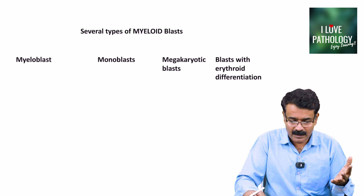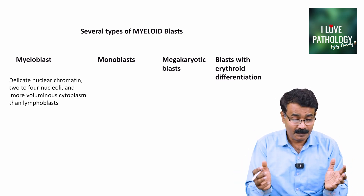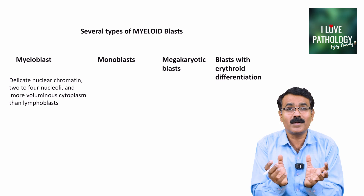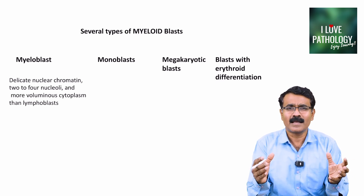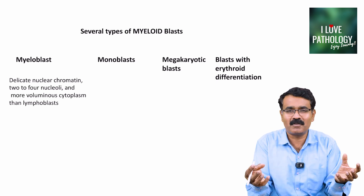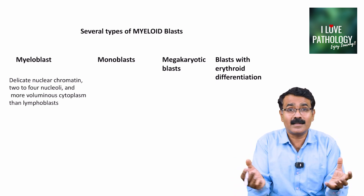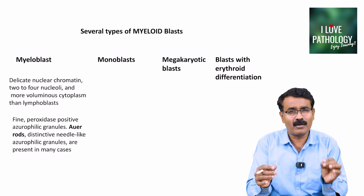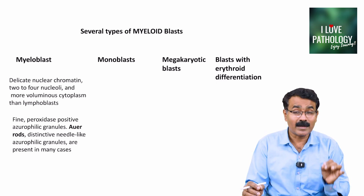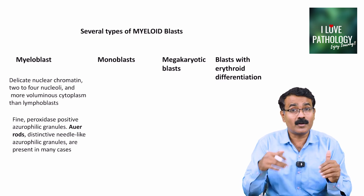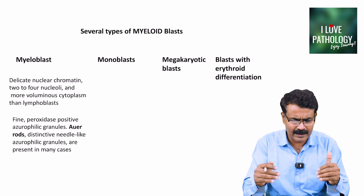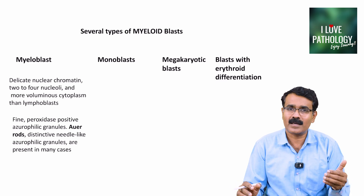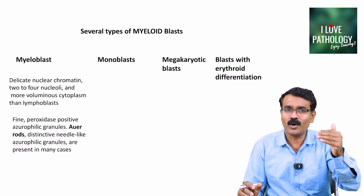The myeloblast is a large cell with delicate nuclear chromatin, one to four nucleoli, and more voluminous cytoplasm compared to lymphoblasts. These are larger blasts with more cytoplasm, and they also have very fine peroxidase-positive azurophilic granules. They also have Auer rods, which are distinct needle-like azurophilic granules found in many myeloblasts.